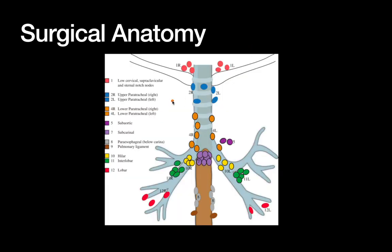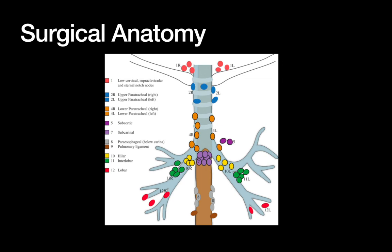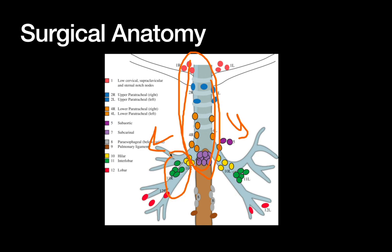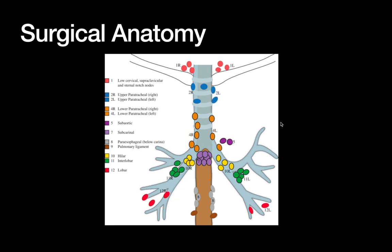The lymph nodes associated with thoracic surgery can seem complex, but most general surgeons don't need to memorize every station. They're usually labeled with a number followed by right or left — for example, 2R or 4L. A key rule: single-digit numbers are your central mediastinal nodes (like 2, 4, and 7), while double-digit numbers are out more peripherally — in the hilum and into the lung, like 10, 11, 12, etc. That gives you a big-picture sense of the nodal stations being discussed.